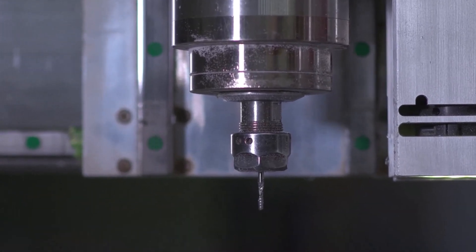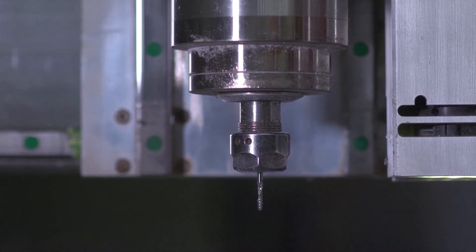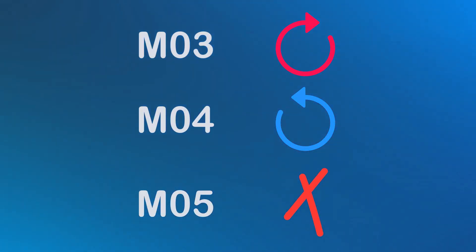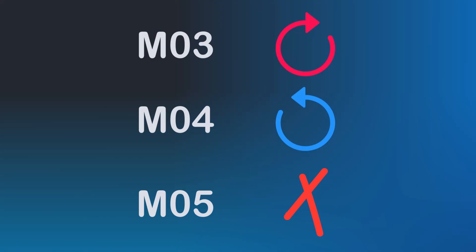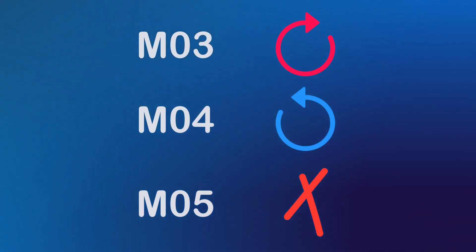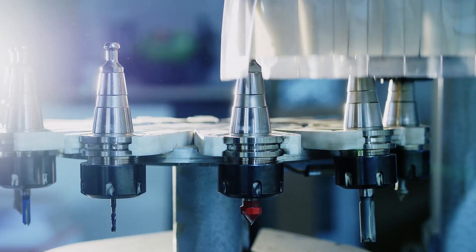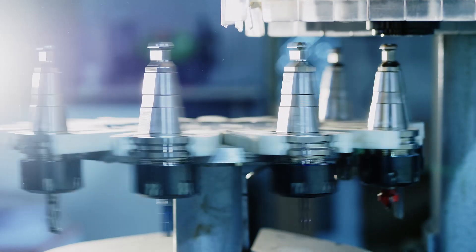In practical terms, you'll use M03 and M04 to start your spindle in the correct direction for each operation, and M05 to stop it when needed. For instance, you can stop the spindle with M05 to change the tool, then restart it in the desired direction with M03 or M04.